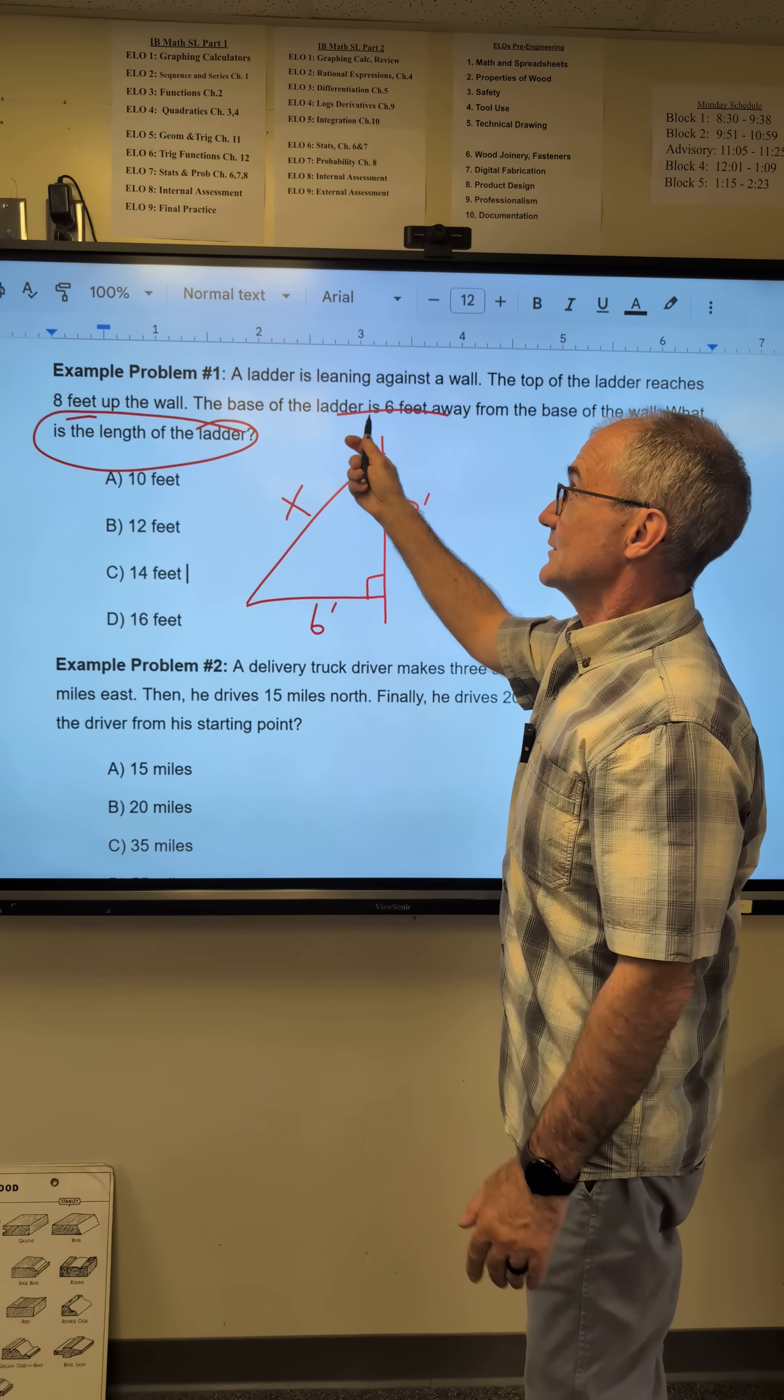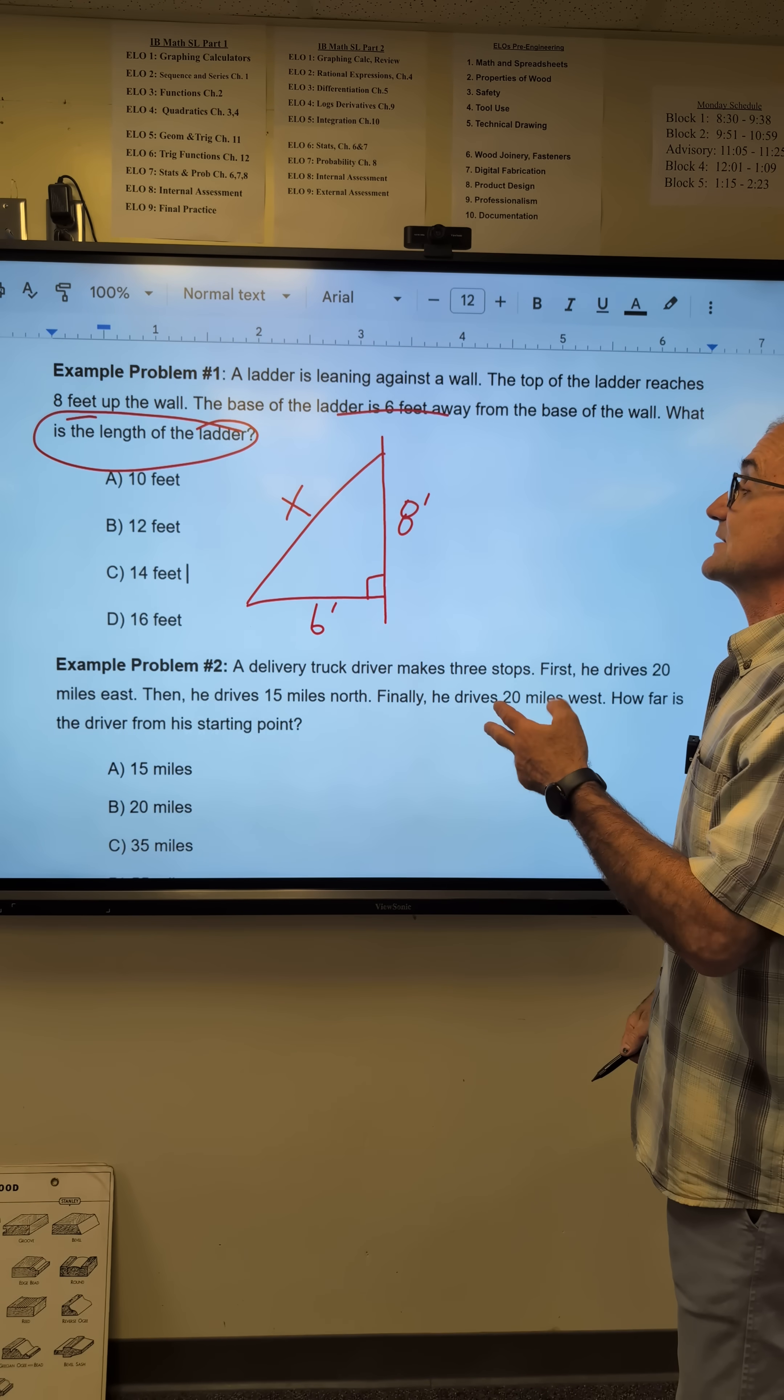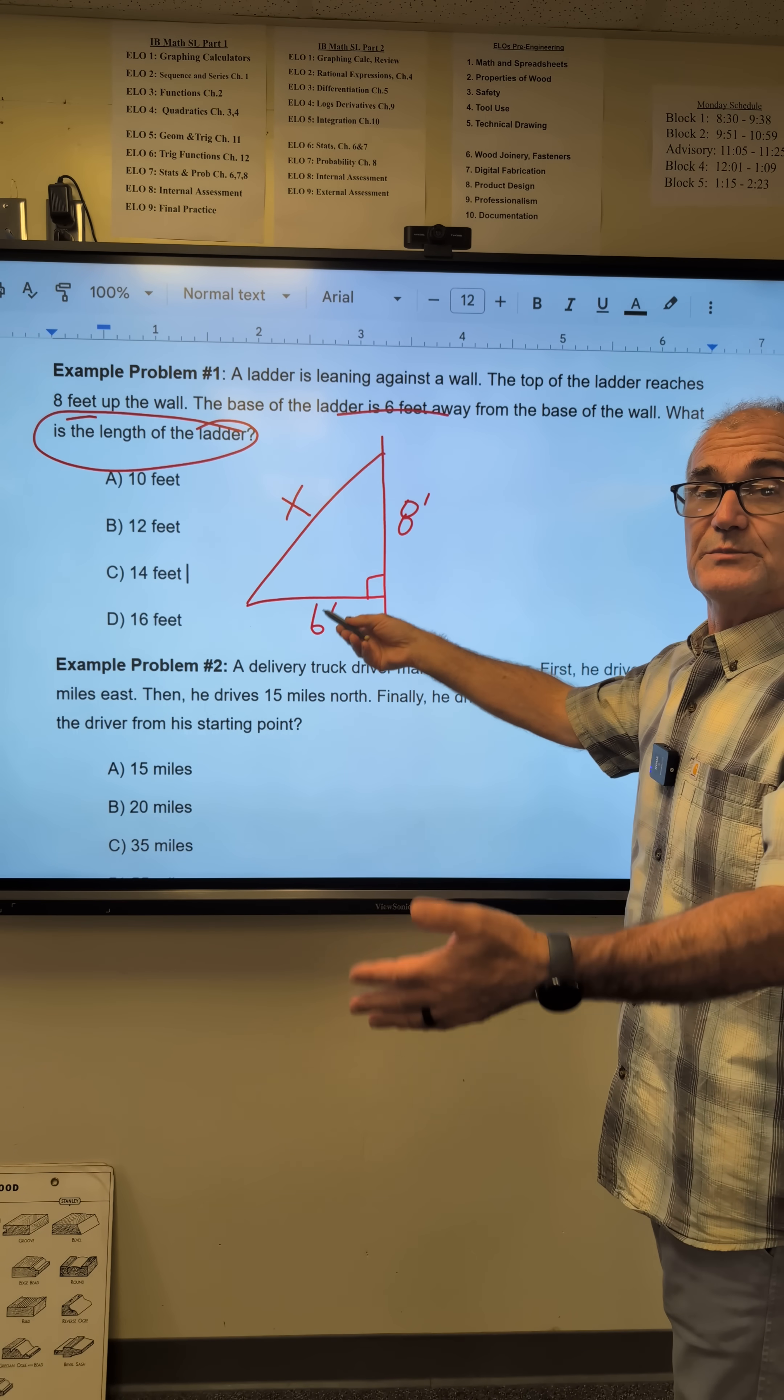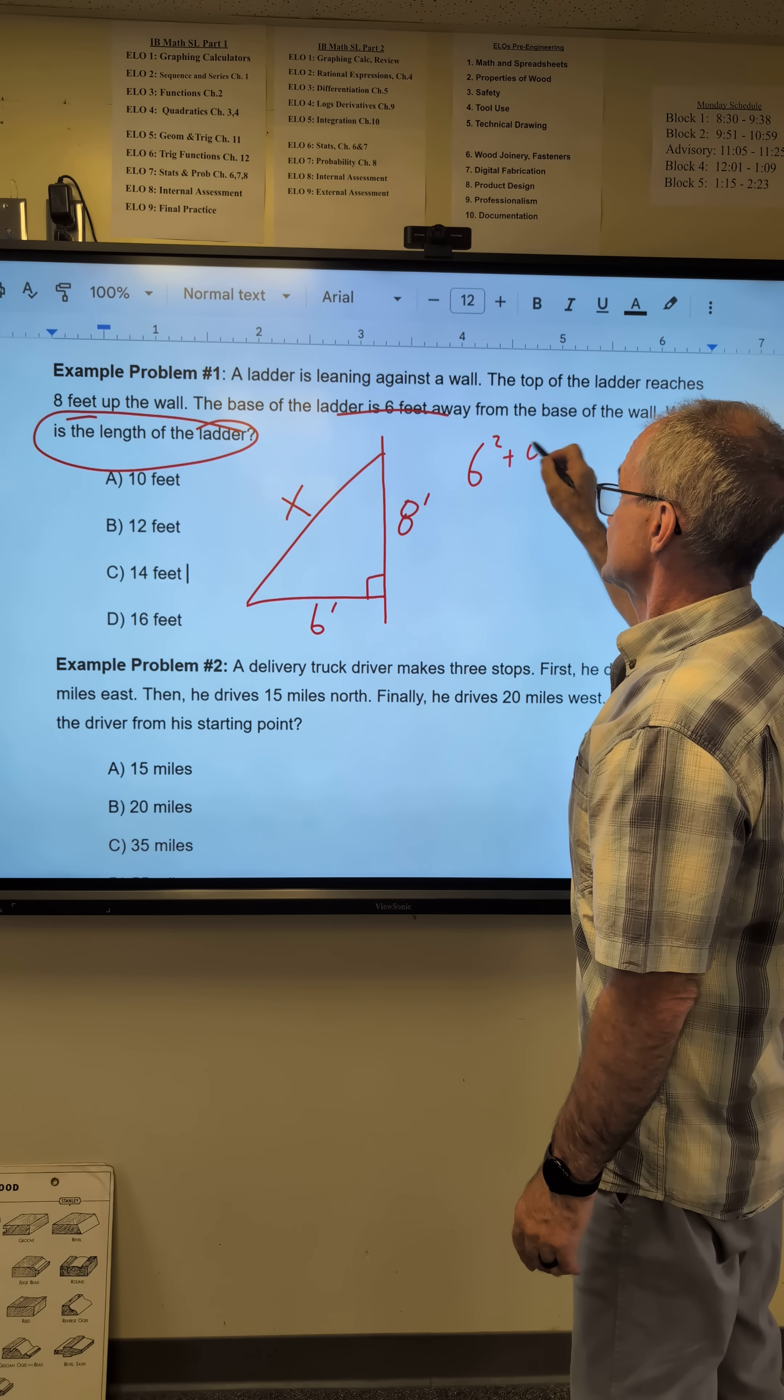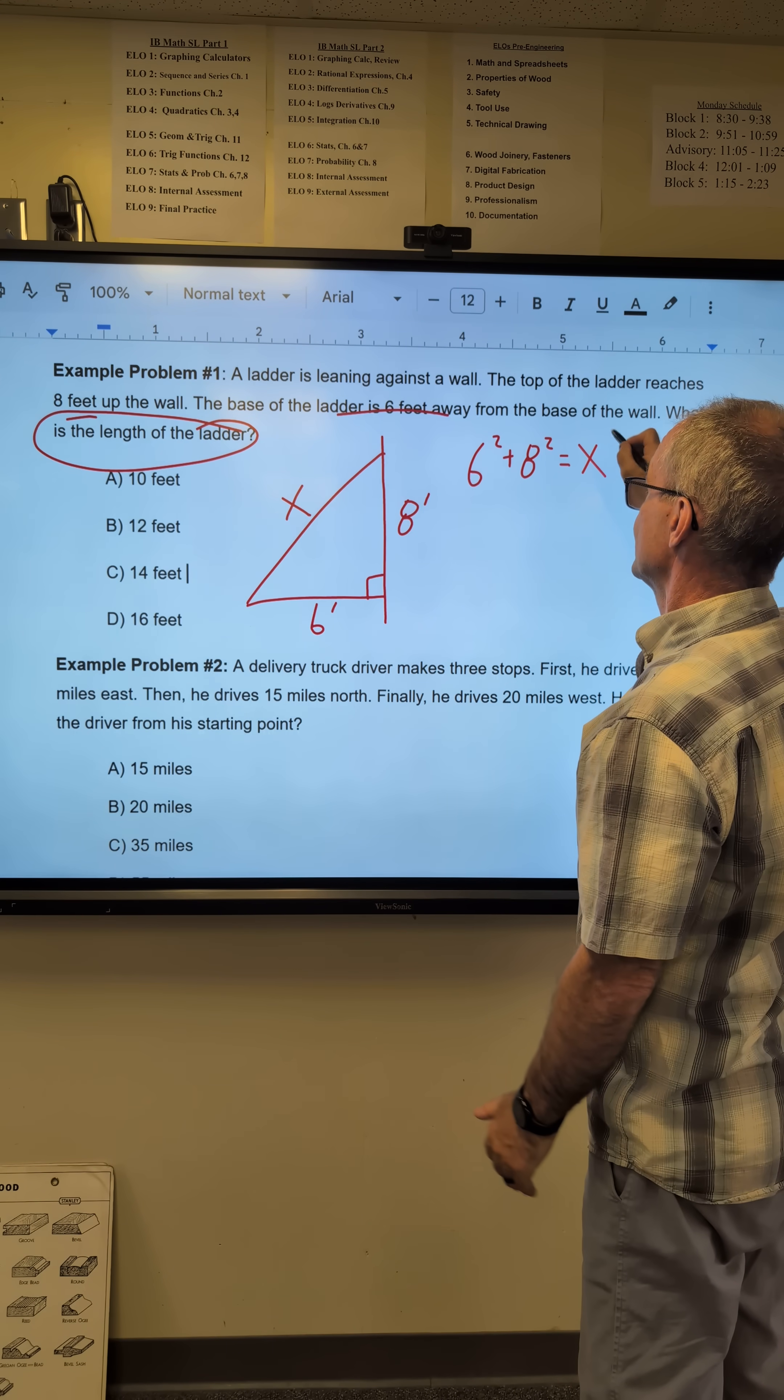Step one, mark up the equation. Step two, draw a picture. Step three, find the equation for that picture. Well, I know that wall is perpendicular to the ground. It gives me a right triangle. Pythagorean theorem: six squared plus eight squared equals this squared, and that's what I'm looking for.